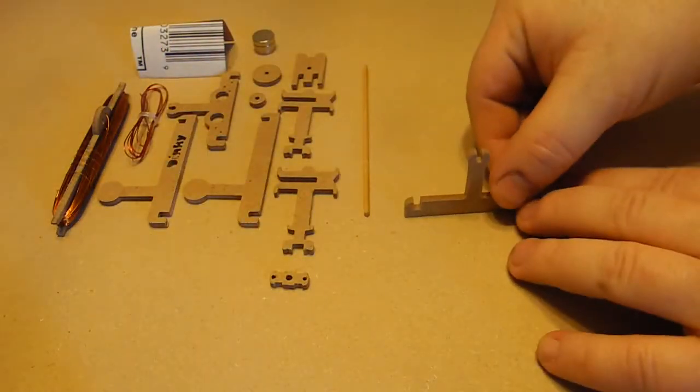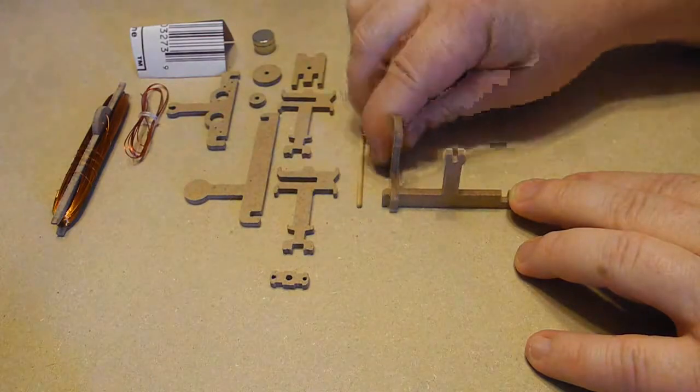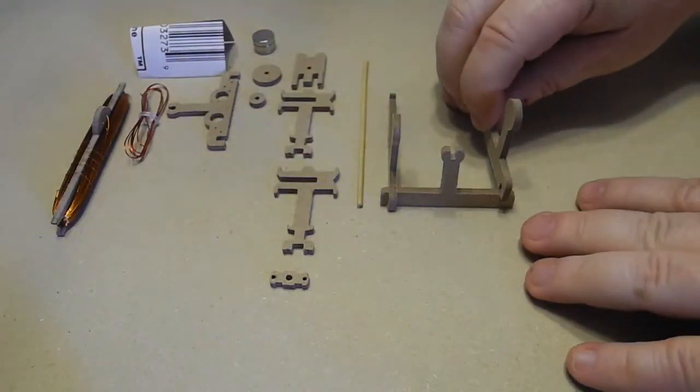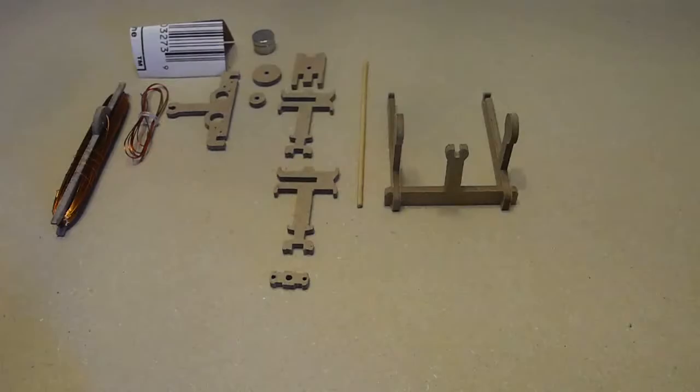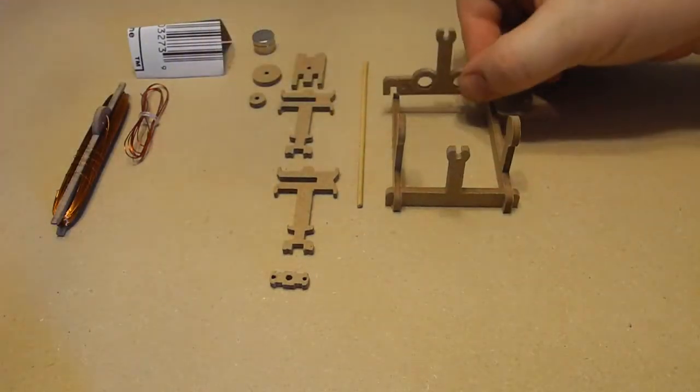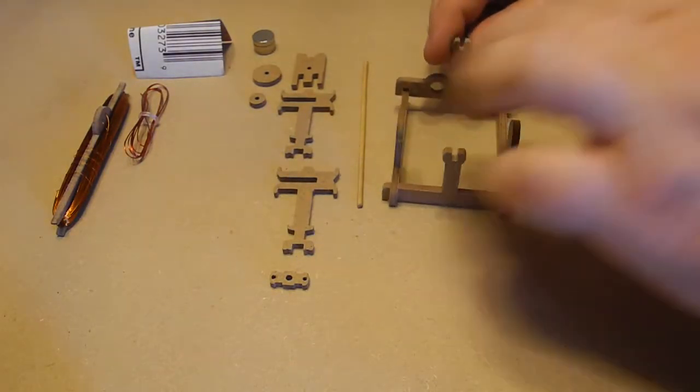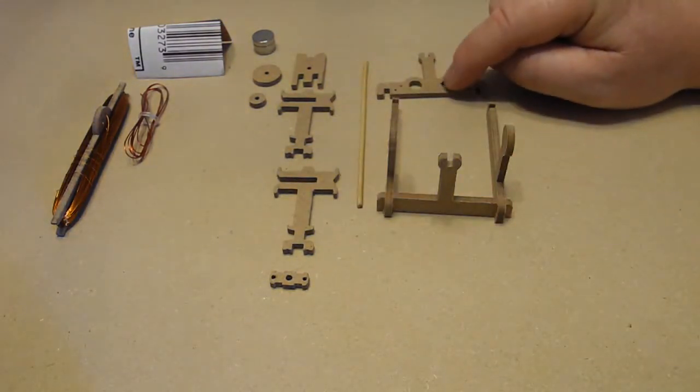We're going to start with this piece here, standing it up. Simply take the two magnet uprights and put those in place like so. You could glue this if you want, but you don't really have to. This piece will go in the end. I'm going to hold off on putting this piece in, however, because I'm going to attach the brushes on here just before.